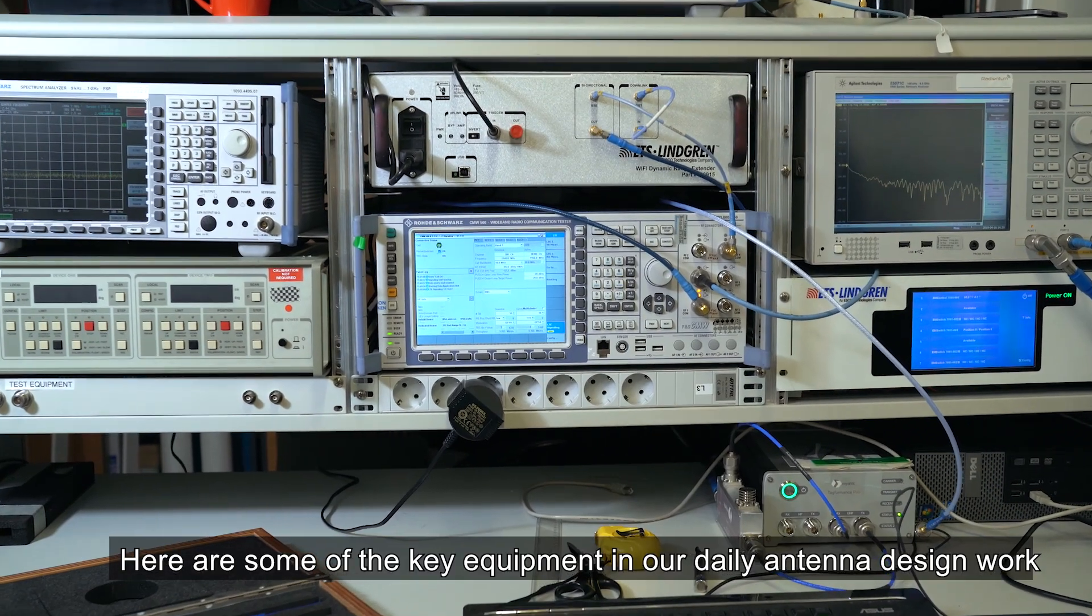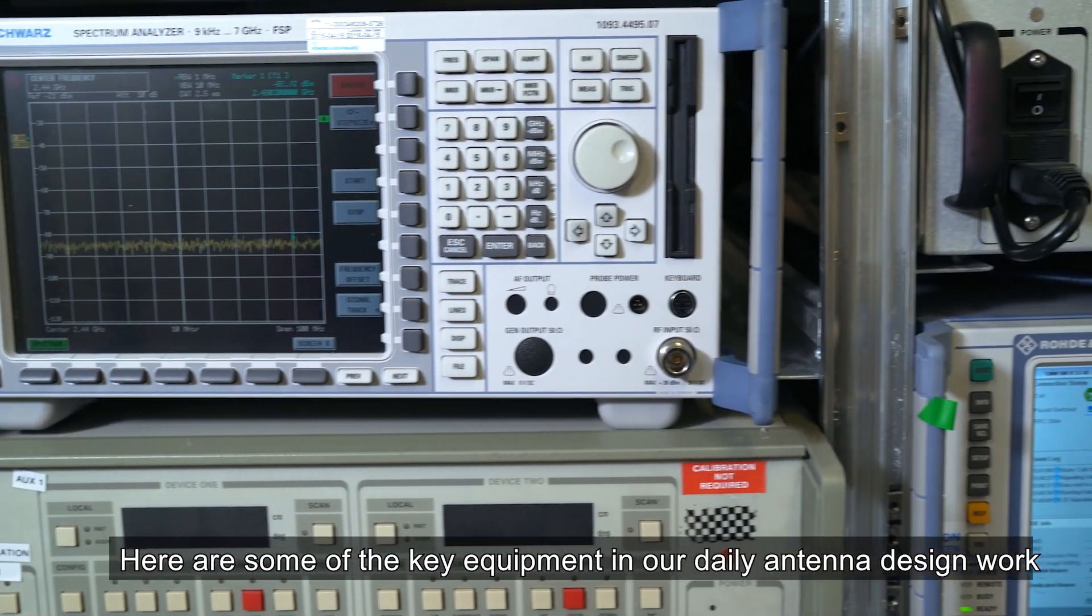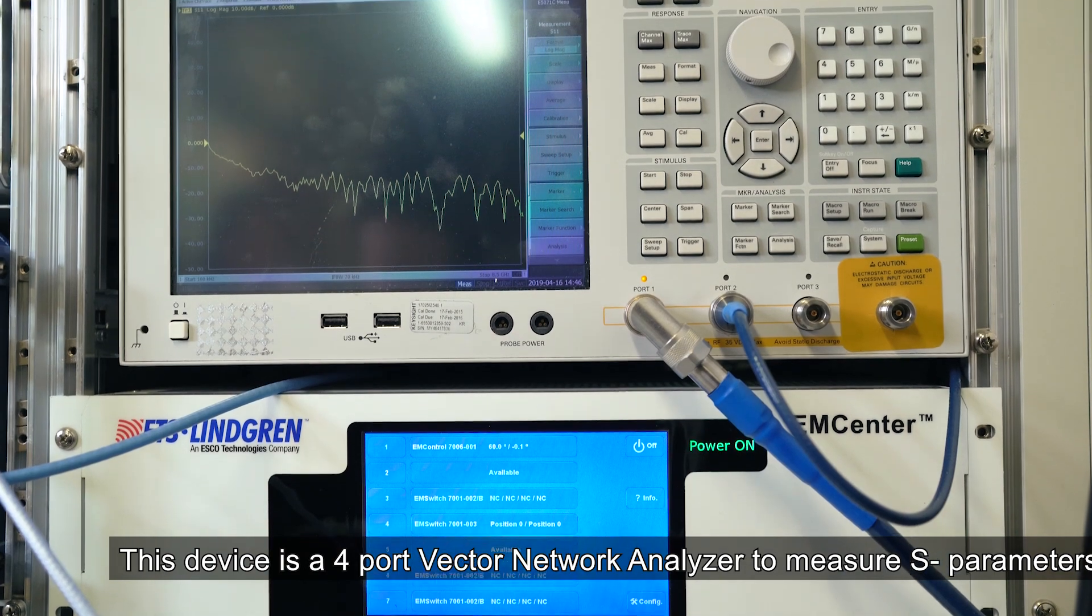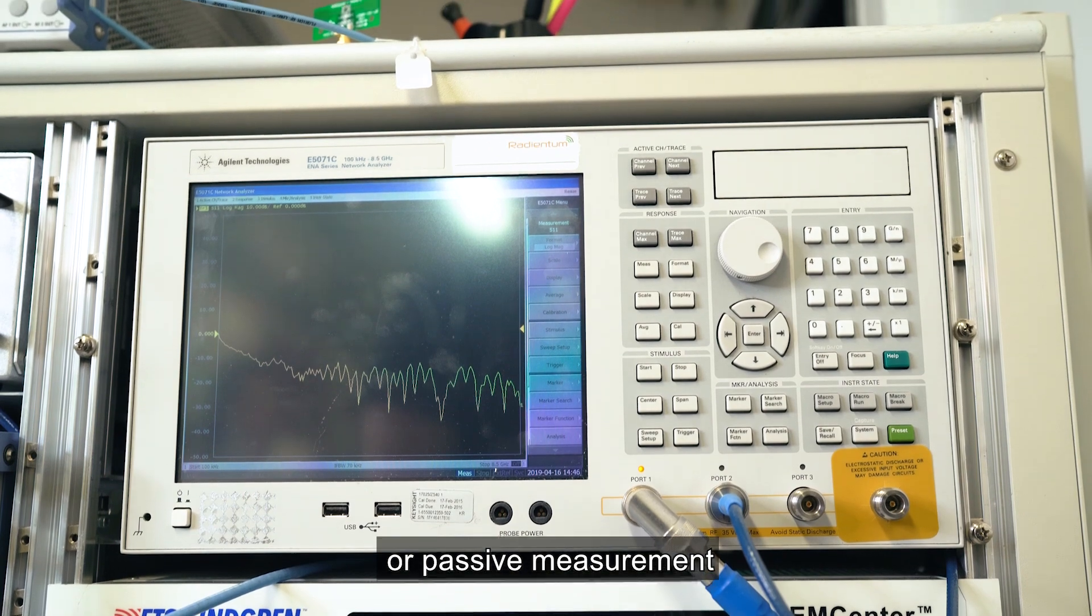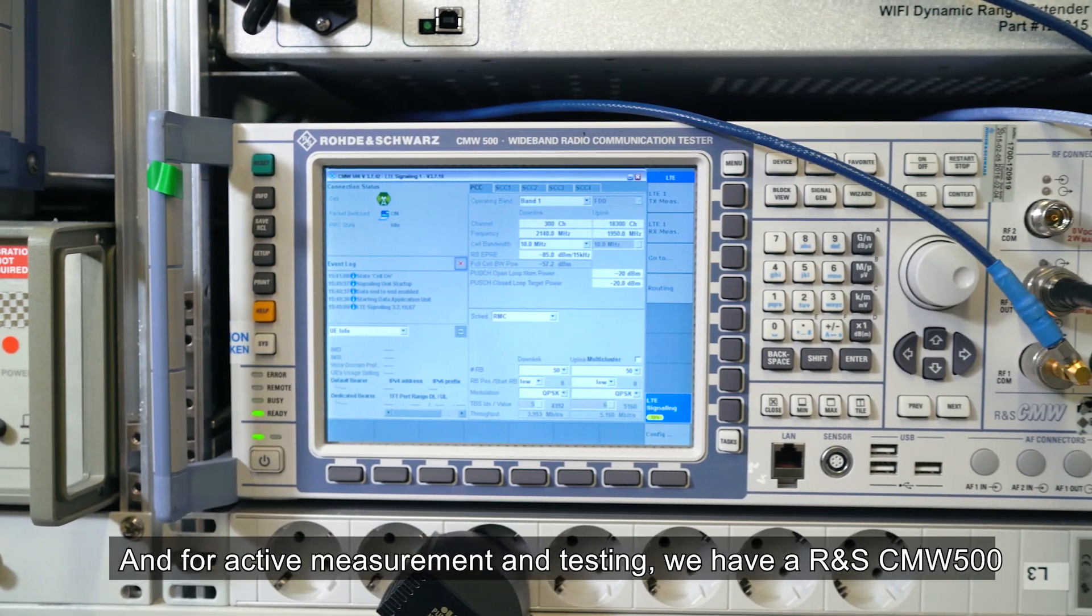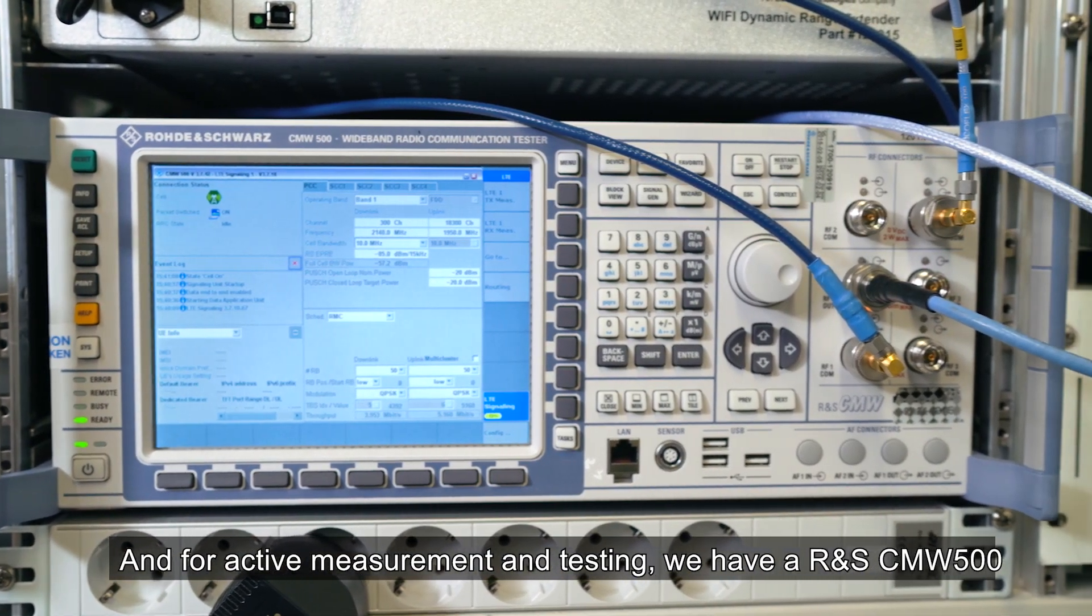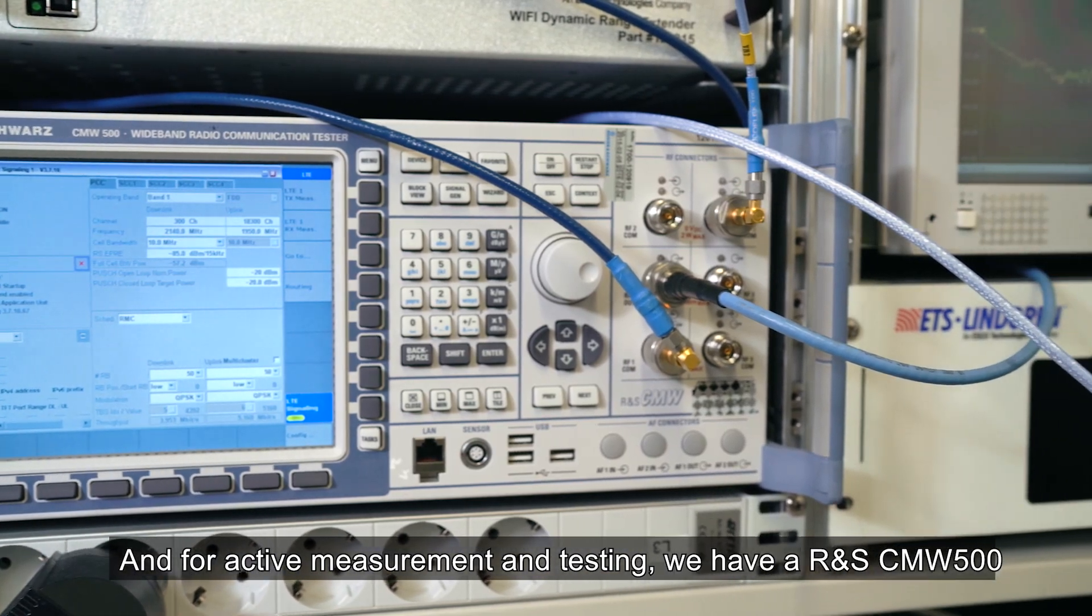Here are some of the key equipment in our daily antenna design work. This device is a four-port vector network analyzer to measure S-parameters or passive measurements. And for active measurements and testing we have a Rohde & Schwarz CMW 500.